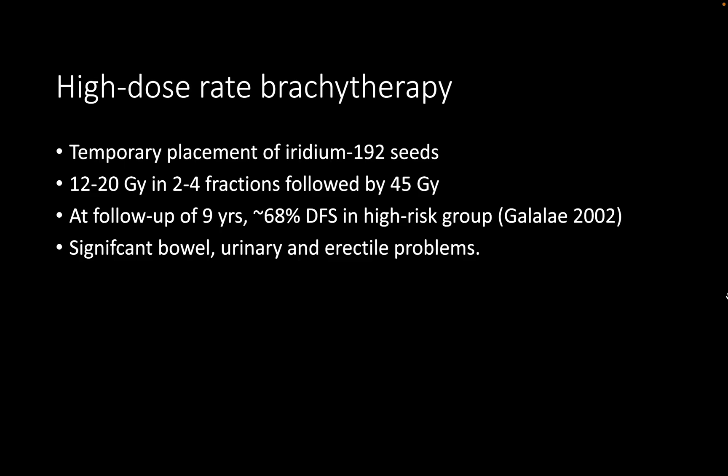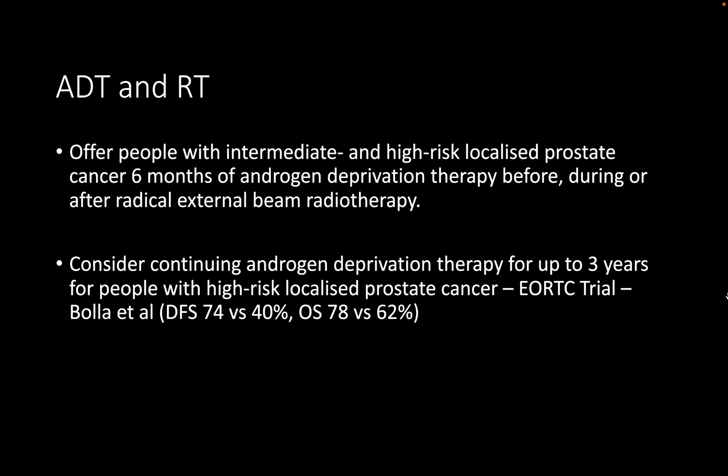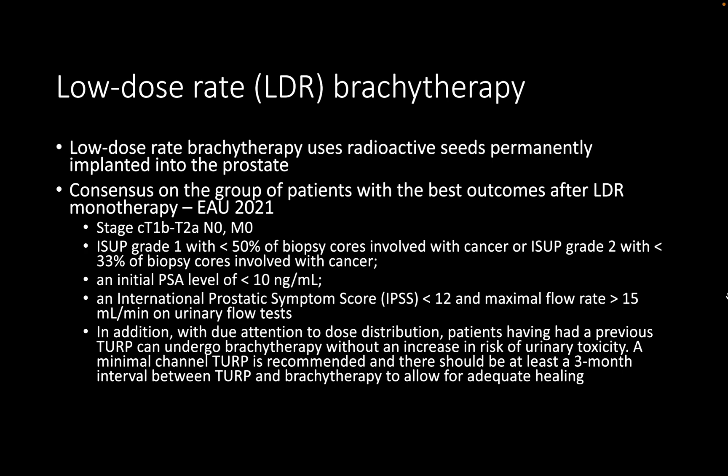To clarify — that is the EORTC trial by Bolla et al., not the RADICALS trial. You can divide patients into intermediate and high-risk groups. Is there any difference in the hormone regimen for both groups? Hormone therapy is not needed for low-risk patients, but for intermediate-risk you give a six-month course, and for high-risk you give up to three years.